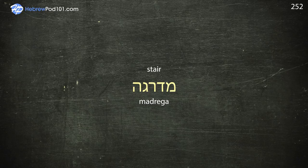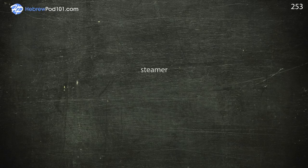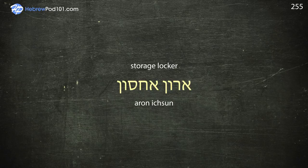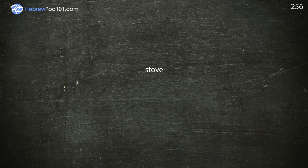Steamer — Madriga. Step — Cade. Storage Locker — Aron Iksun. Stove — Kiraim. Strainer — Mesanenet.